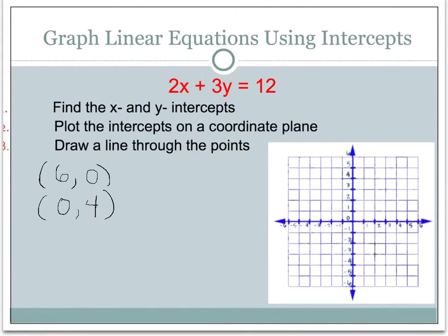After you find those x and y intercepts, you then plot those intercepts on a coordinate plane. For my first point, 6, 0, that's 6 to the right and 0 up and down, so my point is at 6, 0. The second point, 0, 4, is 0 going left and right and 4 in the positive y direction. Once you've plotted your x and y intercepts, you just draw a line through those points, and that becomes the line for the linear equation 2x plus 3y equals 12. So now you have another method of graphing an equation written in standard form.